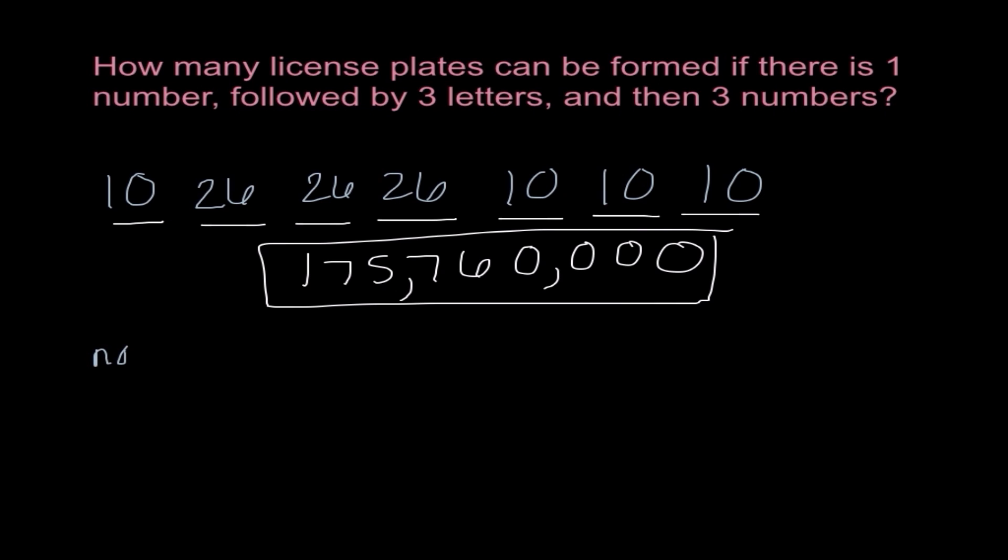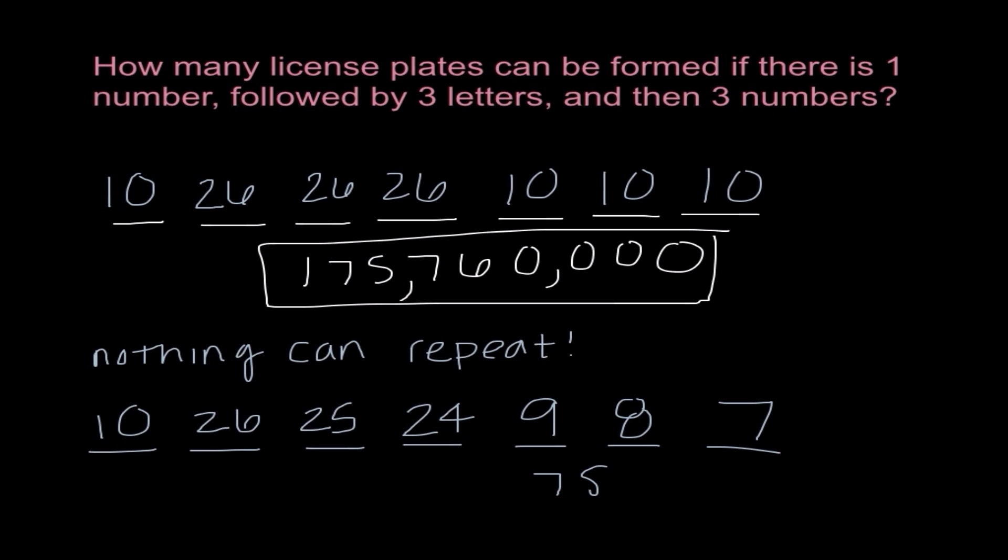Now, a follow-up question. What if nothing can repeat? Then all of a sudden, my options are a little bit different. My first number, I still have 10 options. My first letter, I still have 26. But then, if I know whatever letters here cannot be here or here, in this spot, I would only have 25 options and then 24 options. If I know whatever numbers here cannot be anywhere else, I would have 9 options and then 8 options and then 7 options. So I'm going to go ahead and do 10 times 26 times 25 times 24 times 9 times 8 times 7 and that gives me 7,862,400.